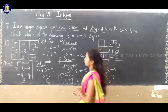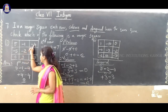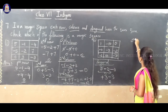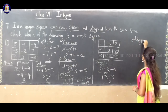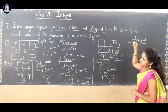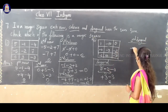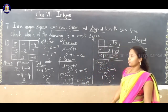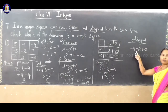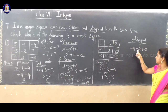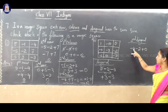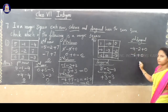One more diagonal to check. Second diagonal: minus 4, minus 2, plus 0. Minus 4 minus 2 — same sign, addition — 4 plus 2 is 6, greater number is 4 so the sign is minus, giving minus 6. Then minus 6 plus 0 gives minus 6.